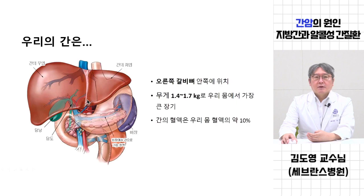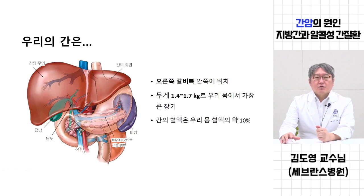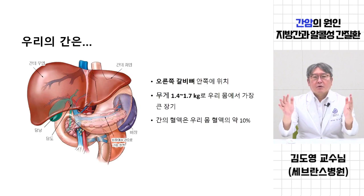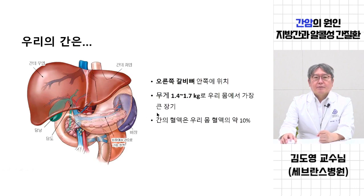경계가 인대로 구분이 되어 있지만 하나의 장기입니다. 그래서 편의상 우협, 좌협 이렇게 구분하긴 하지만 간은 하나다. 무게가 1.5kg 정도 되니까, 사람 간도 우리 몸에서 단일장기로는 가장 크고 무겁다. 그만큼 하는 일이 많아서 그렇습니다.